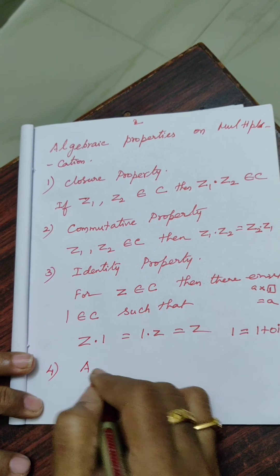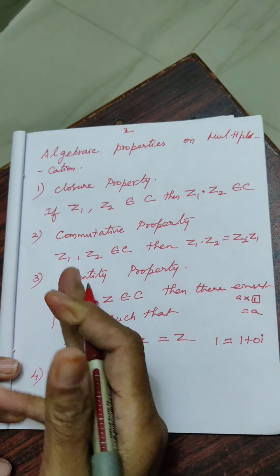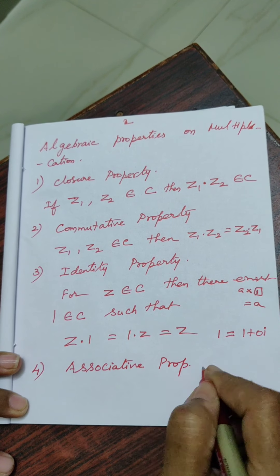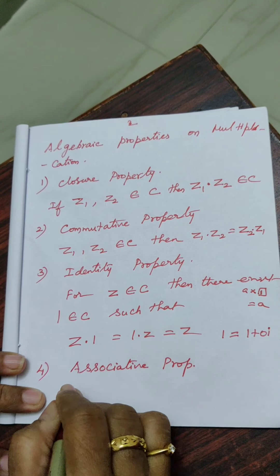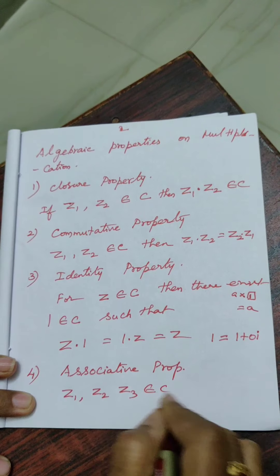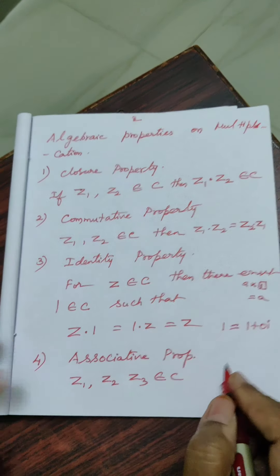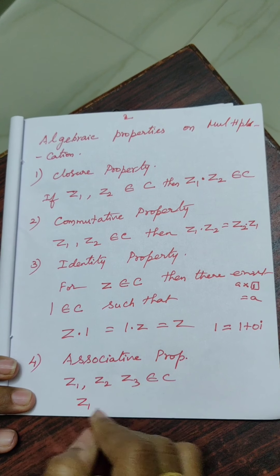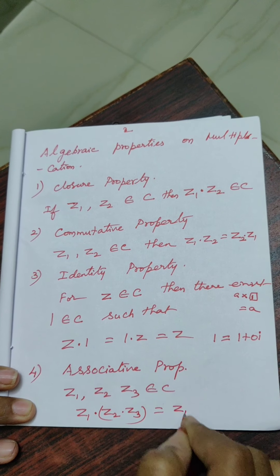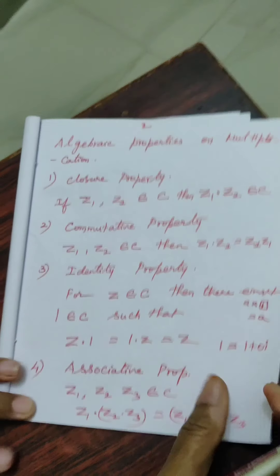Associative property for multiplication: take any three elements Z1, Z2, Z3 in the complex numbers. Then (Z1 into Z2) into Z3 equals Z1 into (Z2 into Z3). Associative property holds for multiplication of complex numbers just as it does for addition.